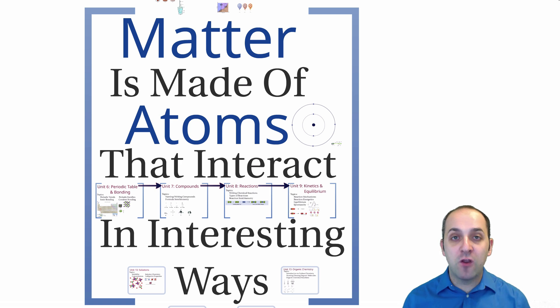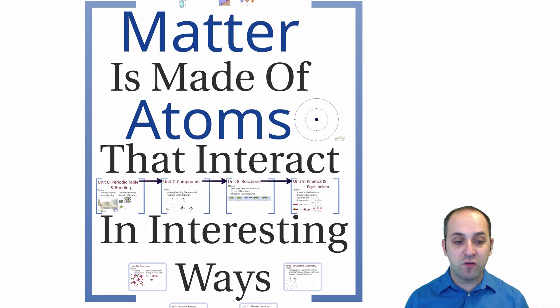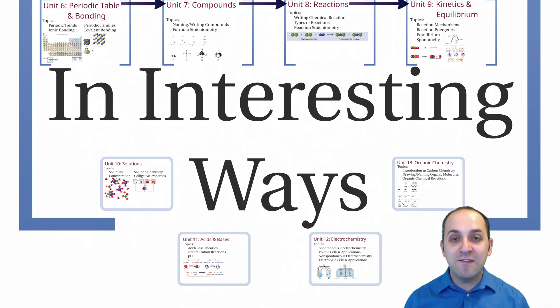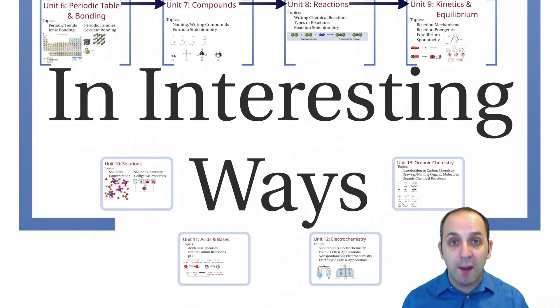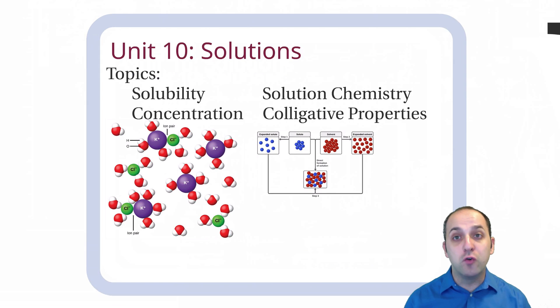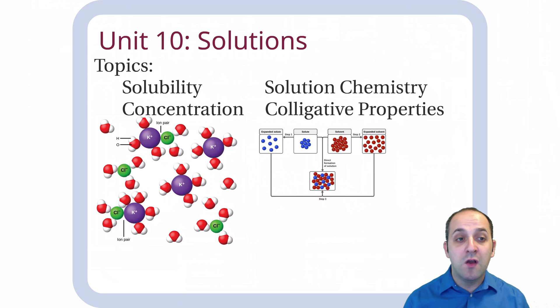Now we're in the fourth and final major section of our course, and in this section we're going to look at four different examples of particular types of chemistry, starting with solution chemistry.